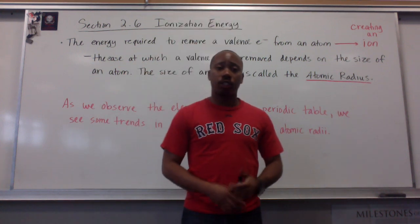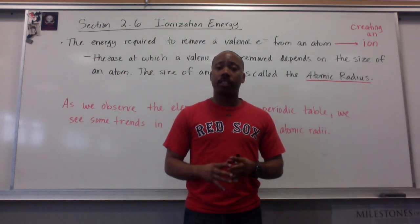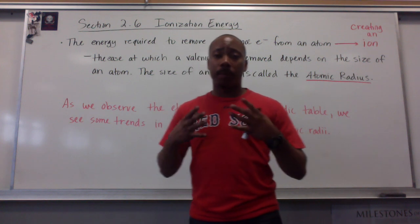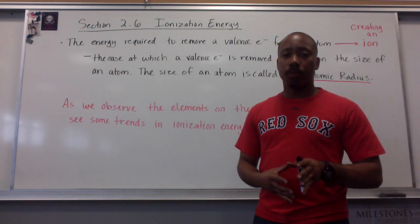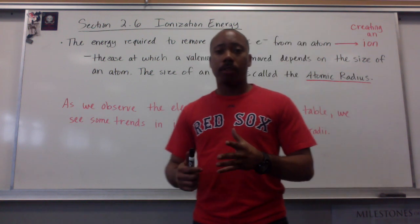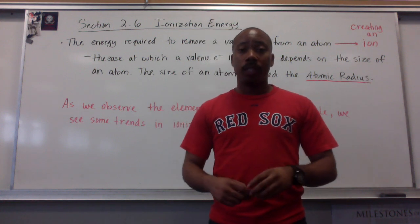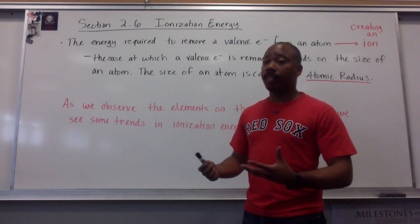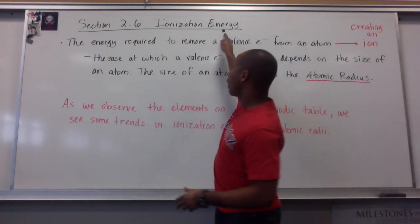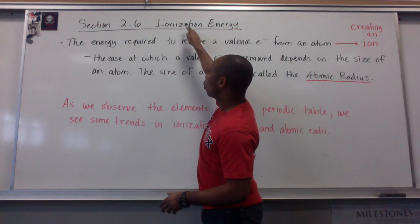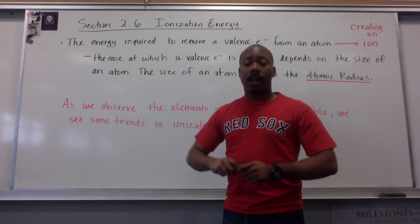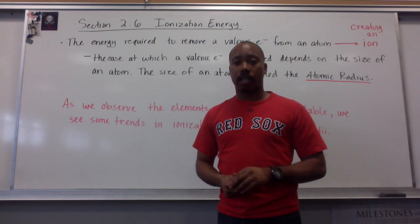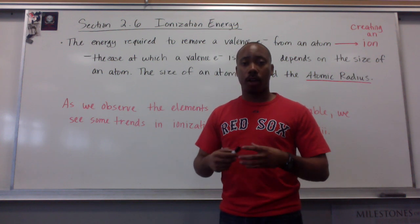Hello gentlemen, welcome to our video on section 2.6 on ionization energy. In class we said that ionization energy can be defined as the energy required to remove a valence electron from an atom. When this is done, we create an ion. So ionization energy can be broken down as the energy required to create an ion. An ion is created when you remove an electron, or an atom gains an electron — a charged atom.